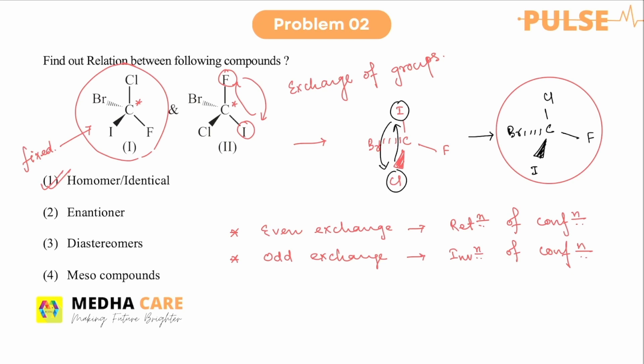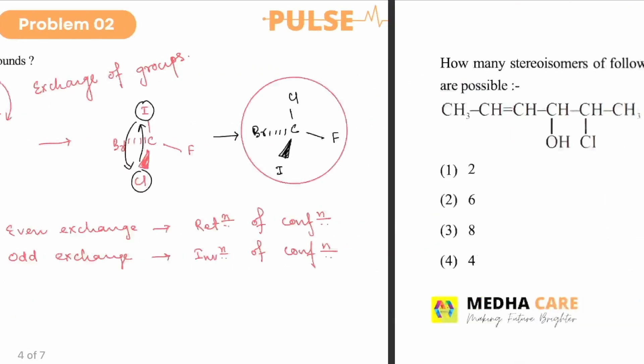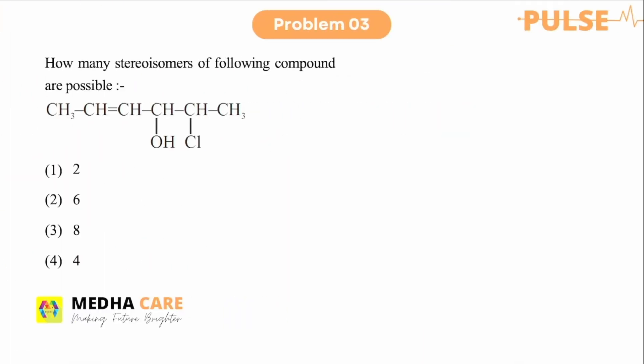Next, the third question is also very important: how many stereoisomers of the following compound are possible? To solve this you have to find out the number of stereo centers. Stereo centers are generally carbons having four different groups, and sometimes double bonds that can show geometrical isomerism are also considered as stereo centers.